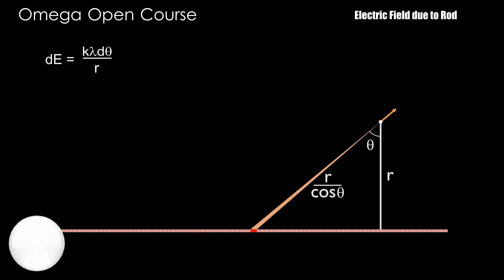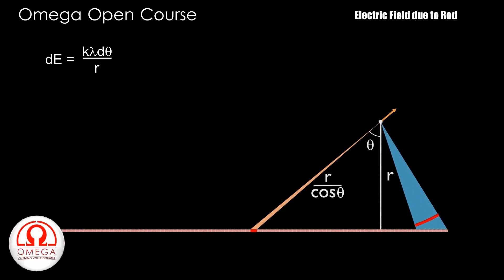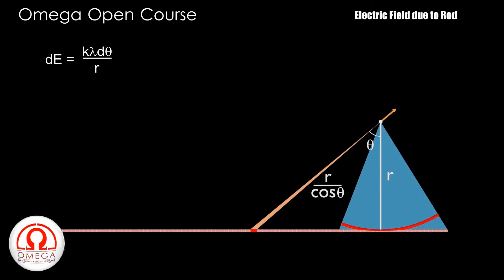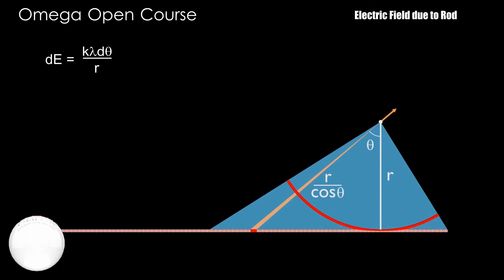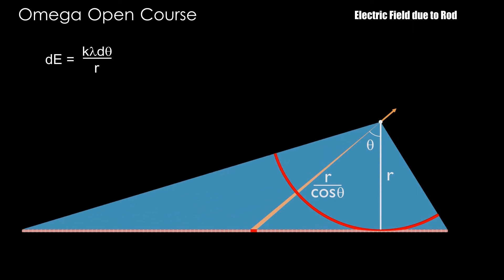Now this is where the fun starts. Let us draw an arc with center at the given point and radius equal to R, such that it subtends exactly the same angle at the point as the rod. Also, let us give the arc some charge so that its linear charge density is the same as that of the rod.